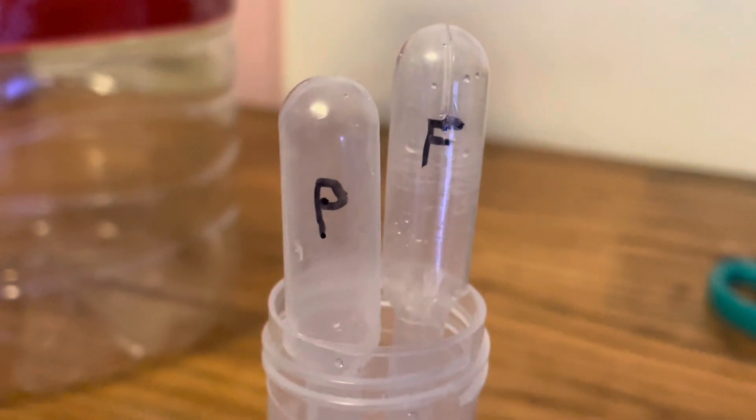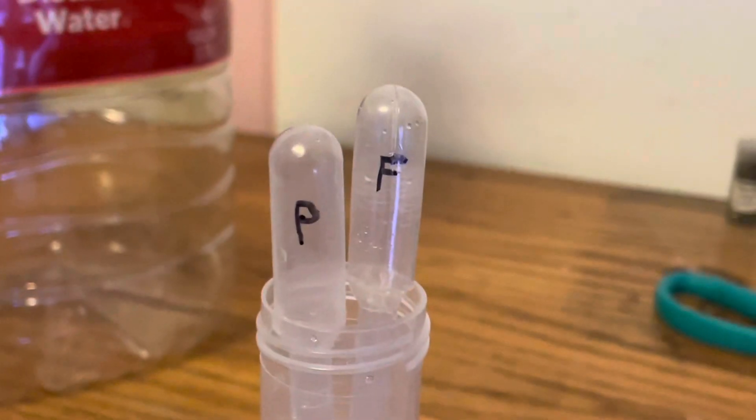For the pipettes I like to label one P for phytoplankton and the other F for fertilizer.